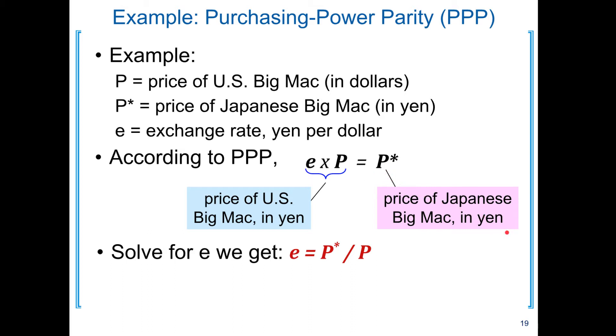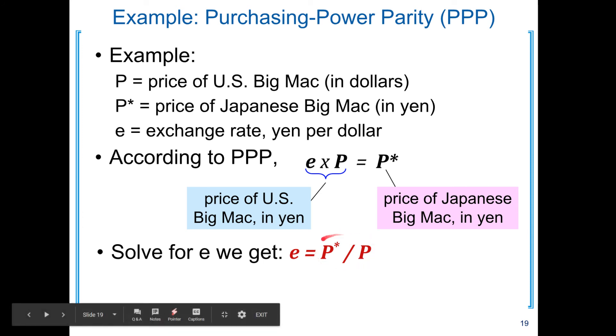This relationship that connects exchange rate with domestic price and foreign price is known as purchasing power parity or PPP. We can rearrange this equation by dividing both sides by P. Then we end up with exchange rate equal to foreign price divided by domestic price. This links exchange rate between different currencies to the relative price ratio of different countries.